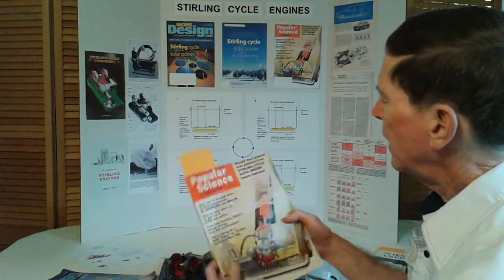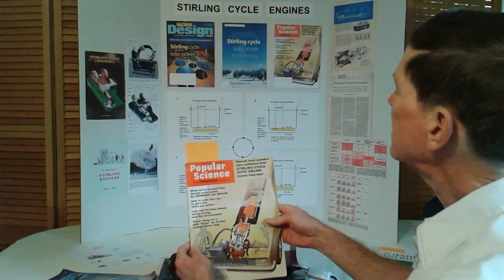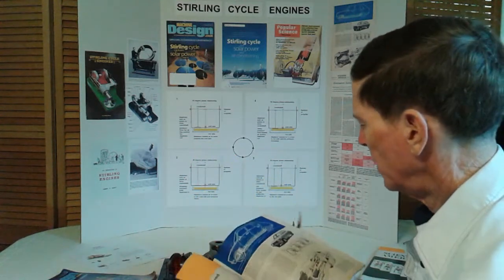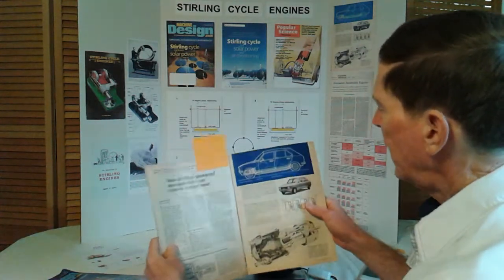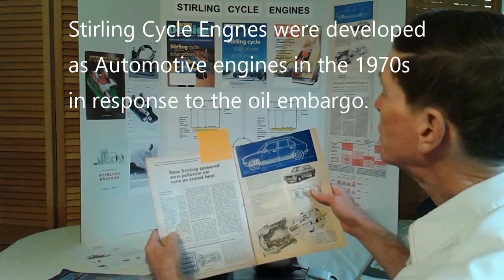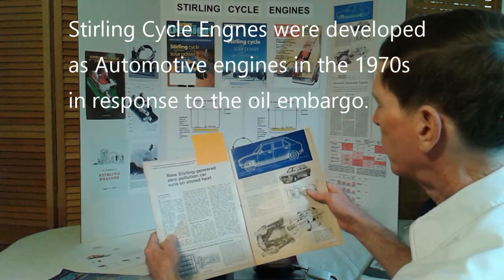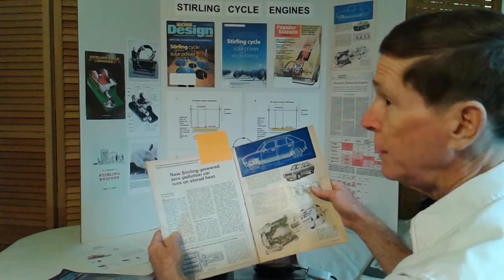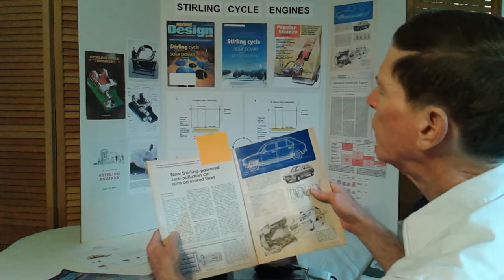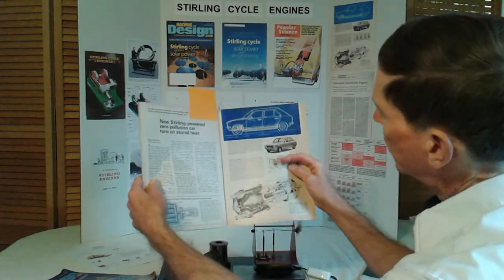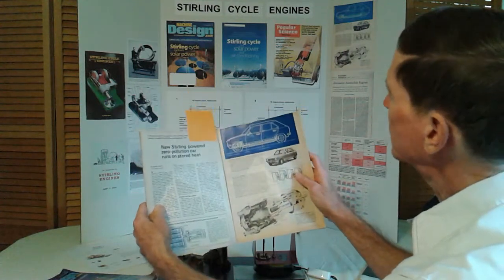Going further back in the archives, there's a Popular Science: Stirling Cycle automobile engine. Back in the early 70s we had an oil embargo, so we actually had oil shortages, gasoline shortages, and people were looking for alternative fuels and engines that could use alternative fuels. And one of the engines investigated was a Stirling cycle engine. There's a multi-cylinder Stirling cycle engine there.